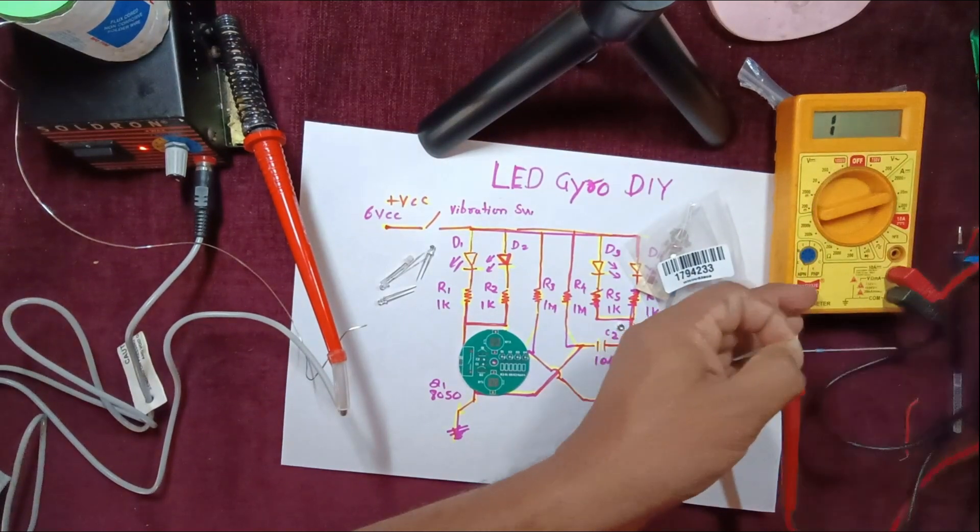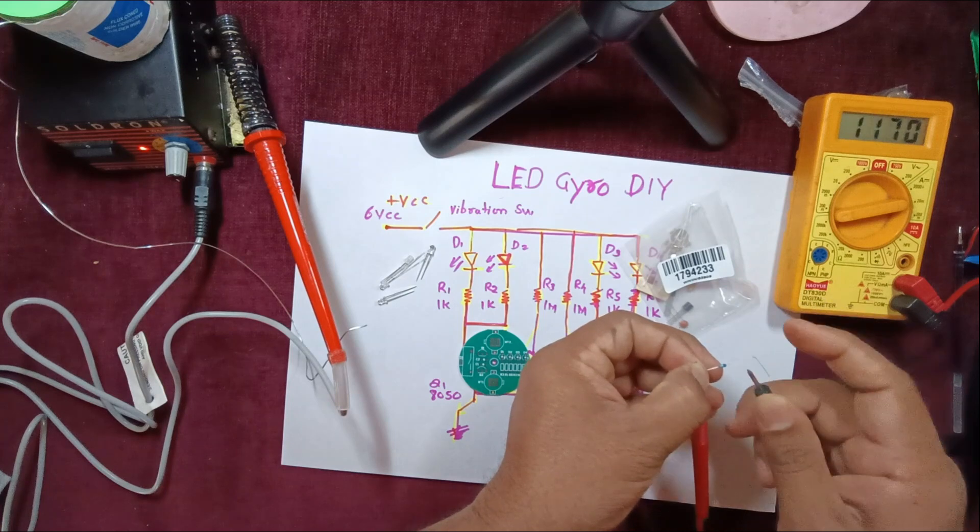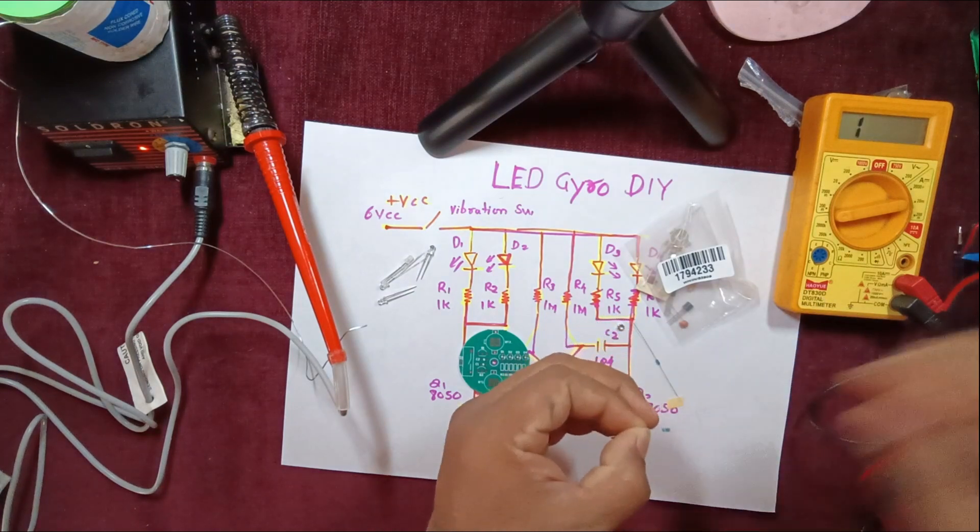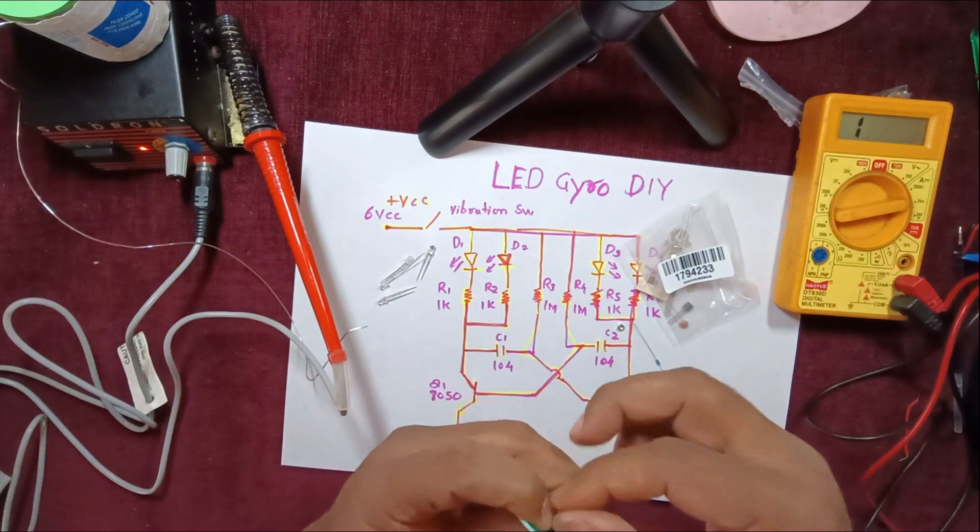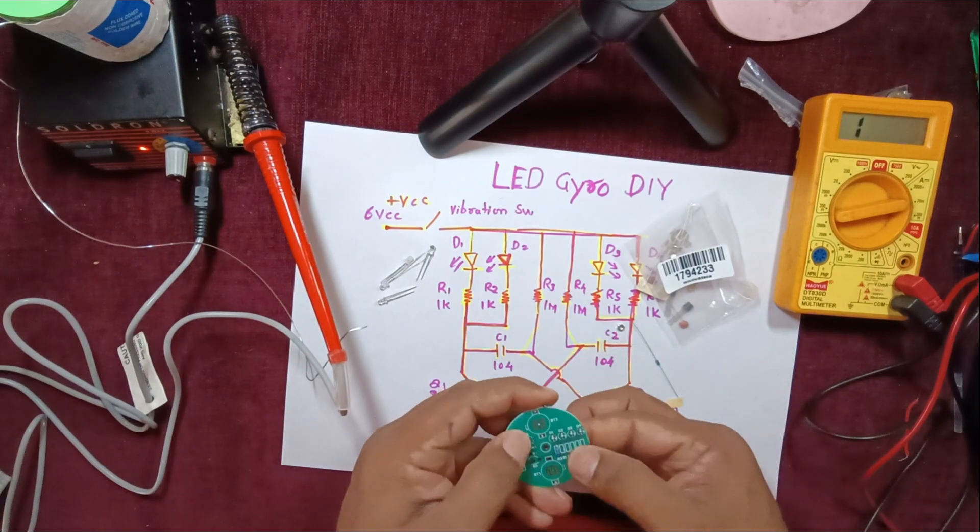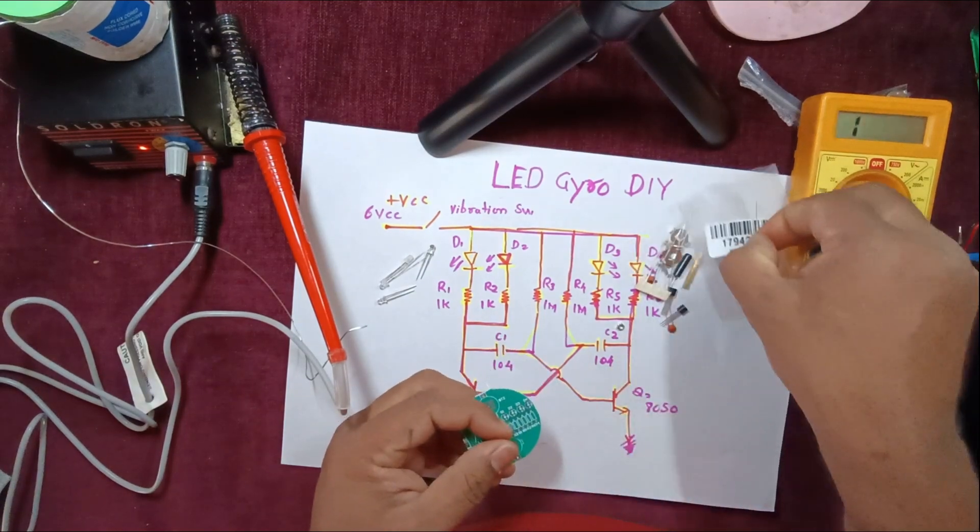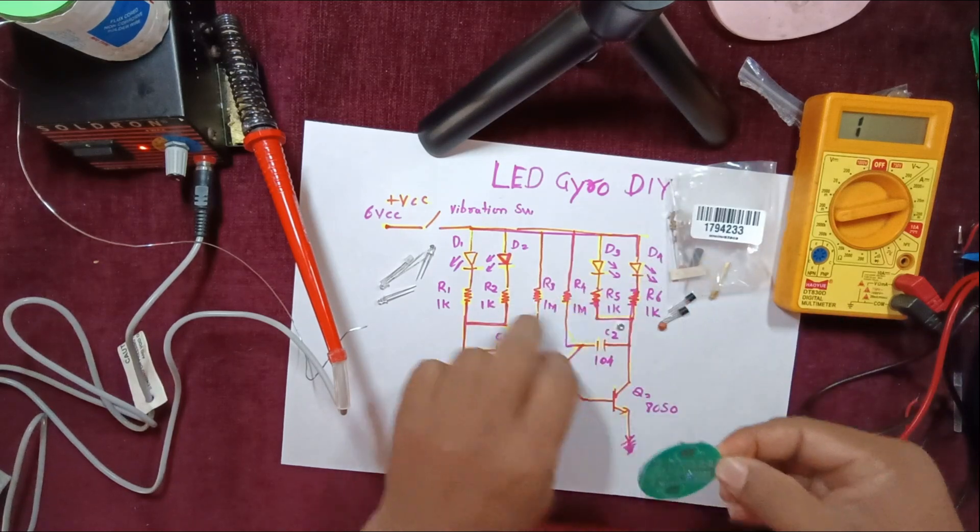Yes, this is one megaohm resistor, you can see. That is your R3 for this particular DIY kit. You should have good soldering skills. R3 and R4 are one megaohm, you can see here R3 and R4 one mega.